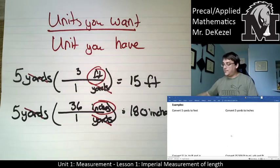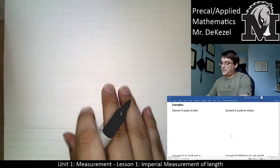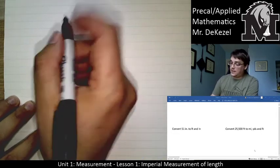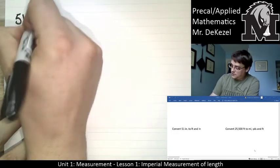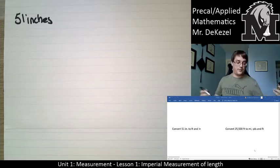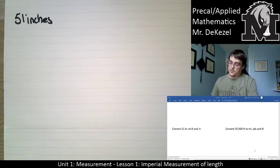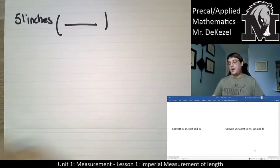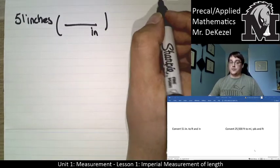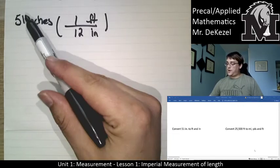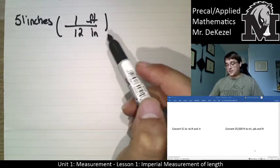Let's do two more examples and then I'll let you try some on your own. We are going to convert 51 inches to feet and inches. So we've got 51 inches and we want to know how to convert it to a feet-and-inches combination, like five foot four inches. What we do is convert the 51 inches into feet first, using our conversion with brackets every time — what we have on the bottom, what we want on the top. We want feet, and we know there are 12 inches in one foot. So we multiply 51 by 1 and divide by 12 — that's just dividing 51 by 12 — and we get 4.25 feet.